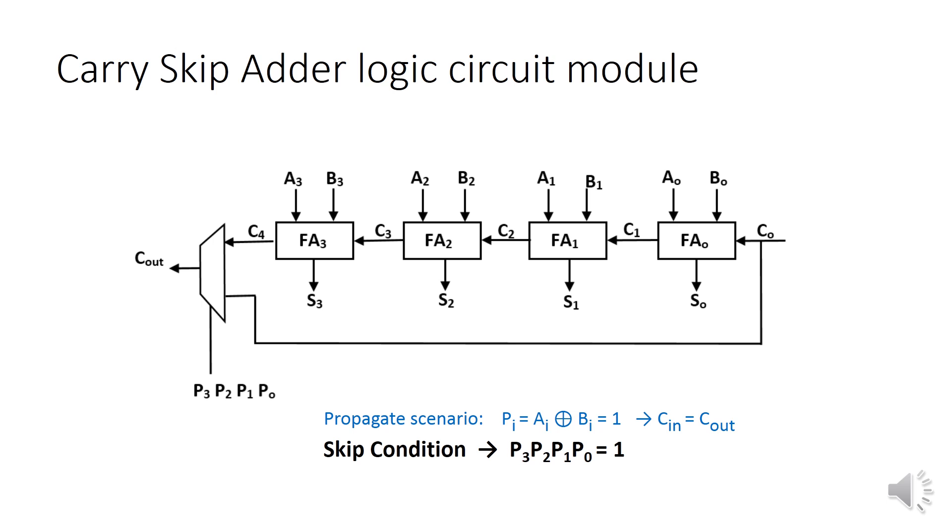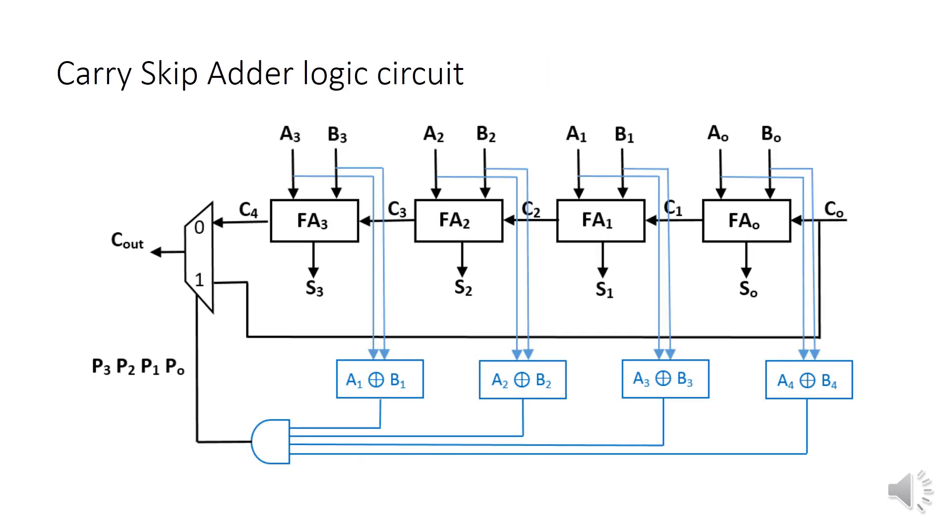So the fastest case is when all the full adders are in propagate mode because in this case you can take the bypass line. So the first thing I have to do for each block is to create the P-signals in order to know as soon as possible if all the P-signals are 1 and consequently I can take the bypass.